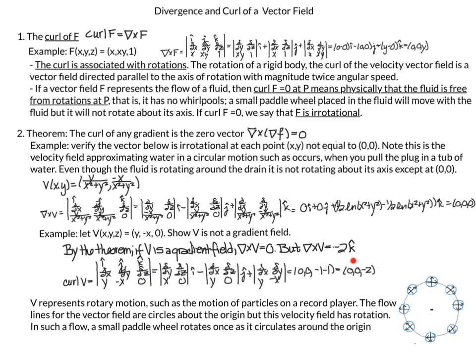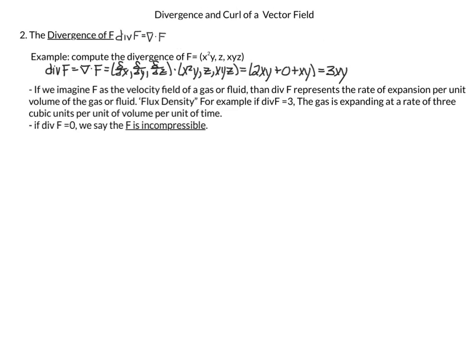When we do the calculation of the curl of v — with our ijk, d/dx, d/dy, d/dz, and v equal to (y, -x, 0) — we get -2. We didn't get 0, so that must mean that v is not the gradient of some function f. This v represents rotary motion such as the motion of particles on a record player. The flow lines for the vector field are circles about the origin, but this velocity field has a rotation, and a small paddle wheel rotates once around the origin.